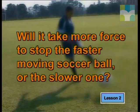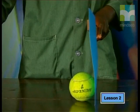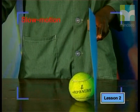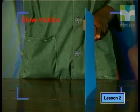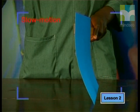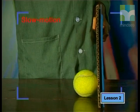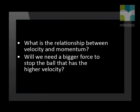The other question we wanted to investigate is: will it take more force to stop the faster-moving soccer ball or the slower one? Do you think there will be a similar relationship between velocity and momentum as there is between mass and momentum? In this demonstration, a slow-moving ball rolls towards a thin piece of cardboard and comes to a stop when it hits the cardboard. A faster-moving ball rolling towards the same piece of cardboard does not stop. When we repeat the experiment with a thicker piece of cardboard, the faster-moving ball does stop. What is the relationship between velocity and momentum, and will we need a bigger force to stop the ball with higher velocity?